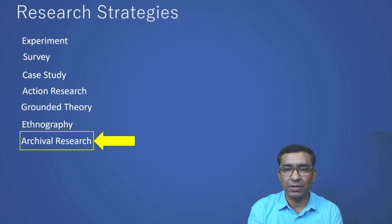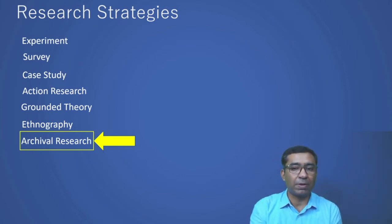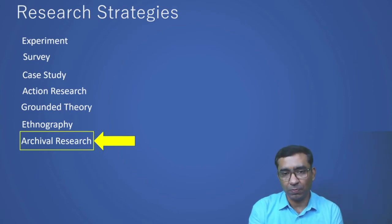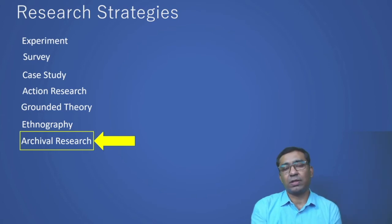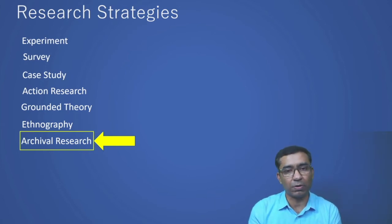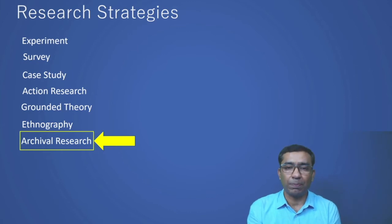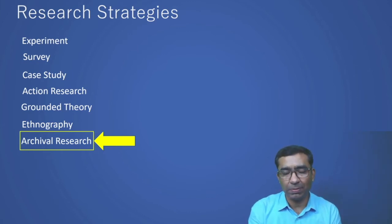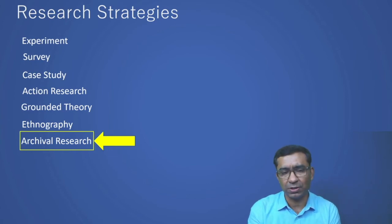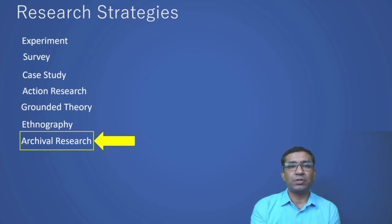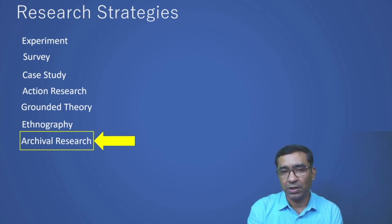Archival research is a form of research where we use already published material — published or already available archives — to articulate any research or form of output to solve any problem. In archival research, the researcher may use already published material, maybe research articles, books, or other documents such as performance appraisals or project reports. All these documents are already published and available in organizations or libraries. You can use library, organization, or online resources to find this published material. These are called archival research.